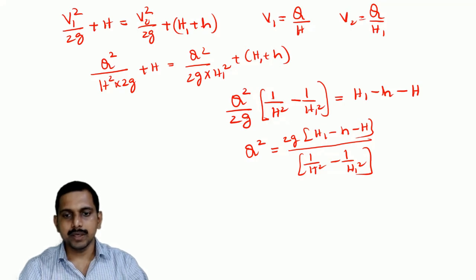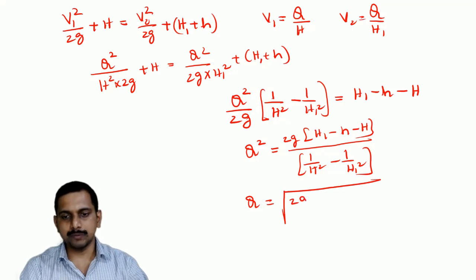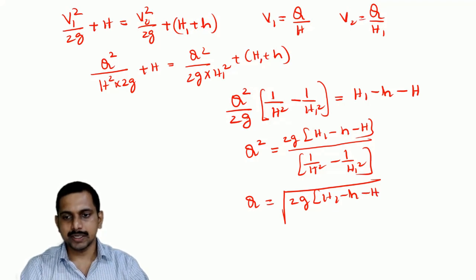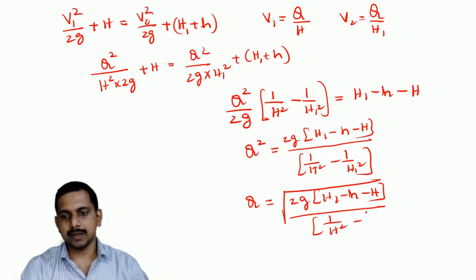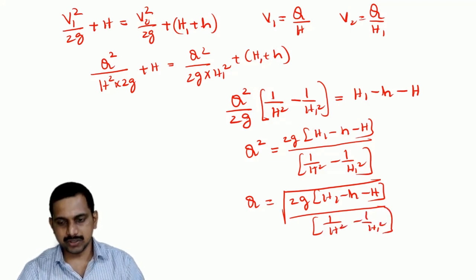Now here, this Q can be written as root of 2g into h1 minus small h plus capital H divided by 1 by h square minus 1 by h1 square. Let us see the answers here.